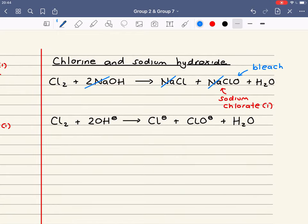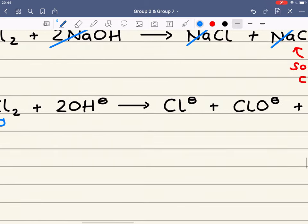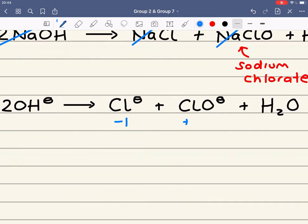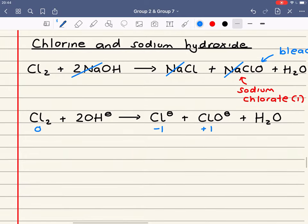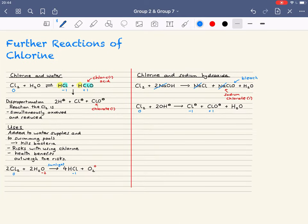Same as the reaction of chlorine and water. We've got chlorine oxidation at zero. It's been reduced to minus one in chloride ions. But the chlorine has been oxidized to plus one in chlorate one ions. And they are the further reactions of chlorine.